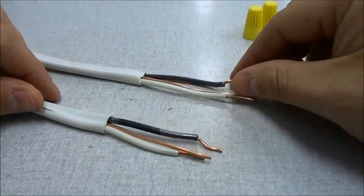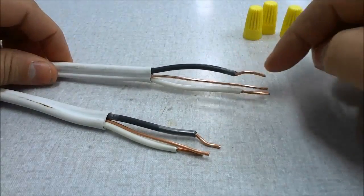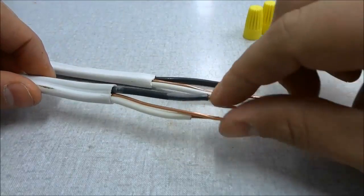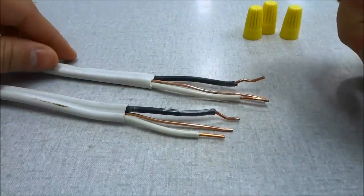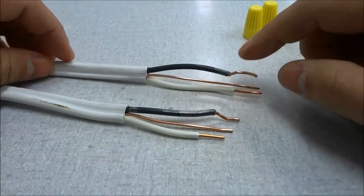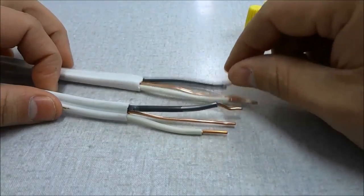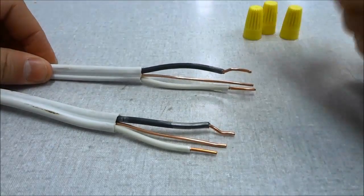As you can see right here, I have two sets of electrical wires and there is a black, a white, and an uninsulated wire on each. In most cases, this is what you will encounter. For the purposes of this video, I will be working with these two wires which have a black wire, a white wire, and an uninsulated wire on each.